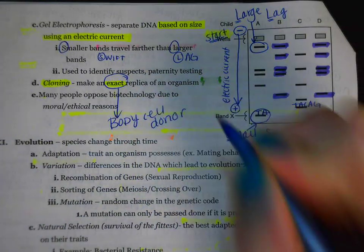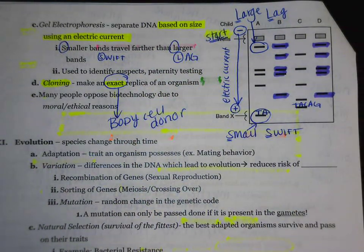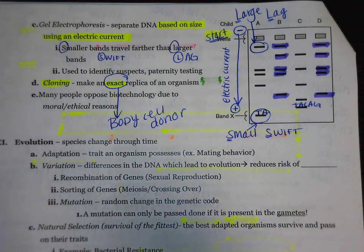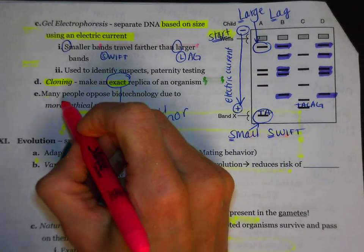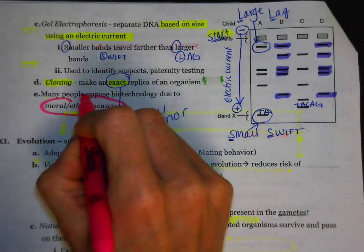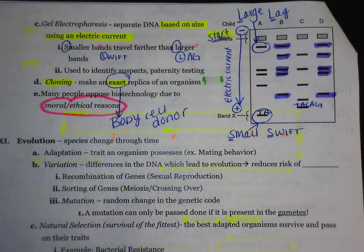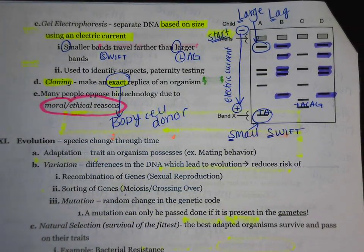Finally, many people do have problems with cloning and other types of genetic manipulation. The reason for that is moral and ethical reasons — people see it as playing God, so they're not really comfortable with the idea of doing this.